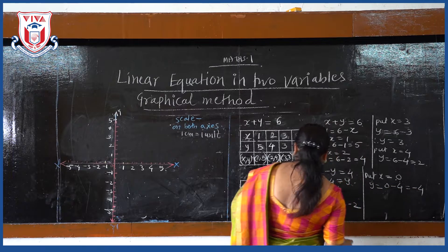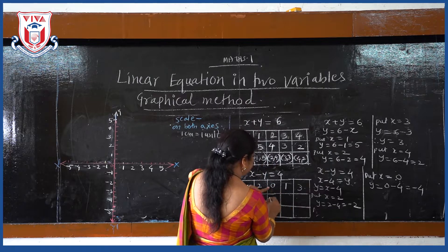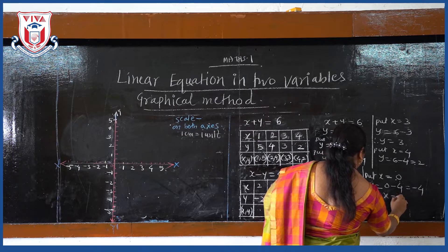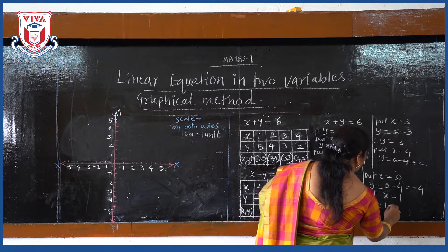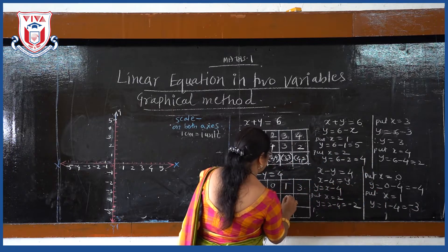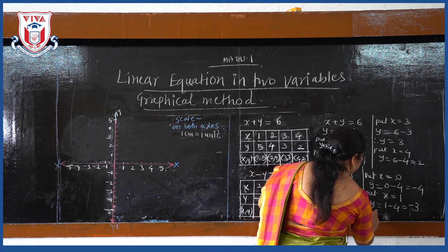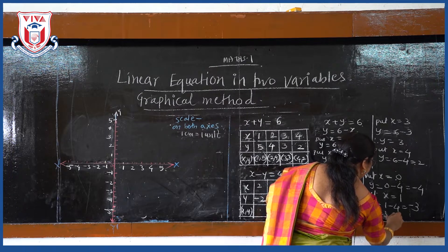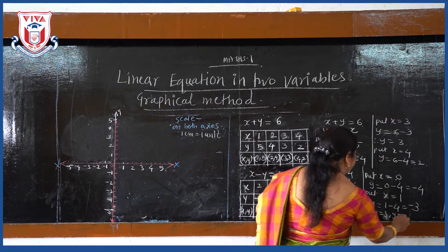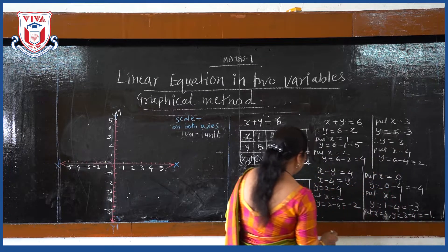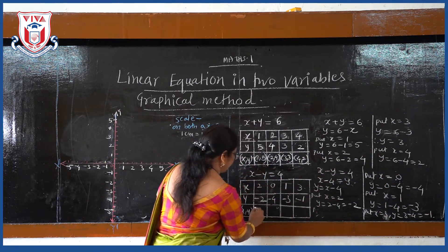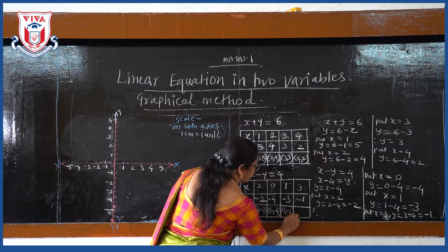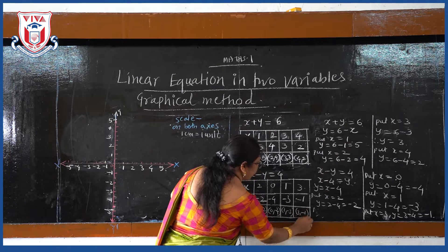When x equals 0, y equals minus 4. Put x equal to 1, so y is equal to 1 minus 4, that is minus 3. Put x equal to 3, then y is equal to 3 minus 4, that is minus 1. So the coordinates for the second equation are (2, −2), (0, −4), (1, −3), and (3, −1).